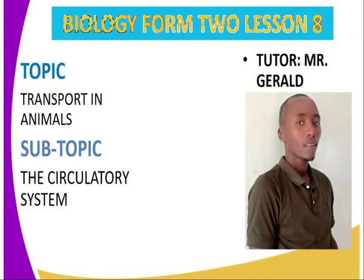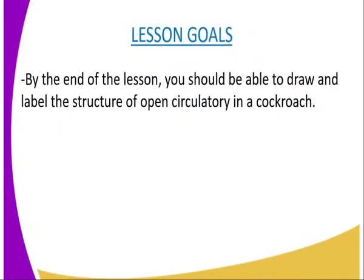Remember that in transport in animals there must be a circulatory system such that products are circulated all over the body. We are going to have the following lesson goal: by the end of the lesson we should be able to draw and label the structure of the open circulatory system in a cockroach.